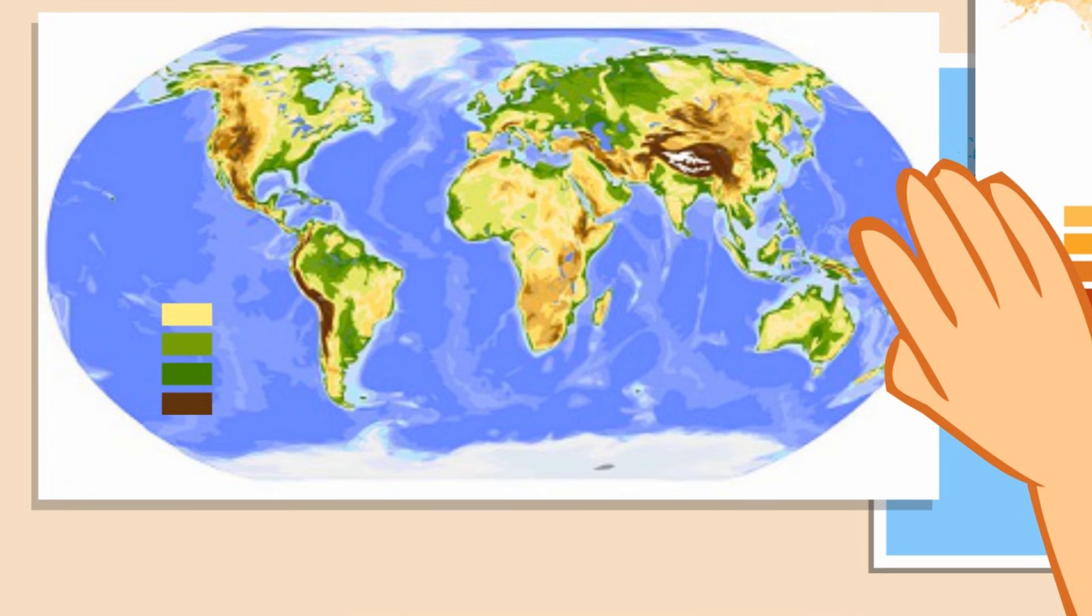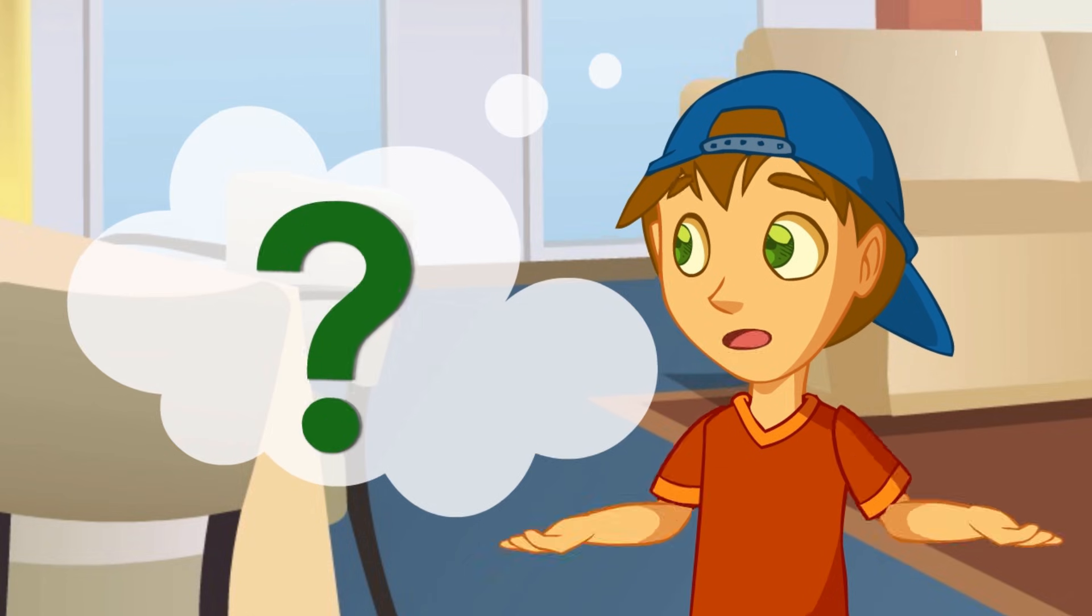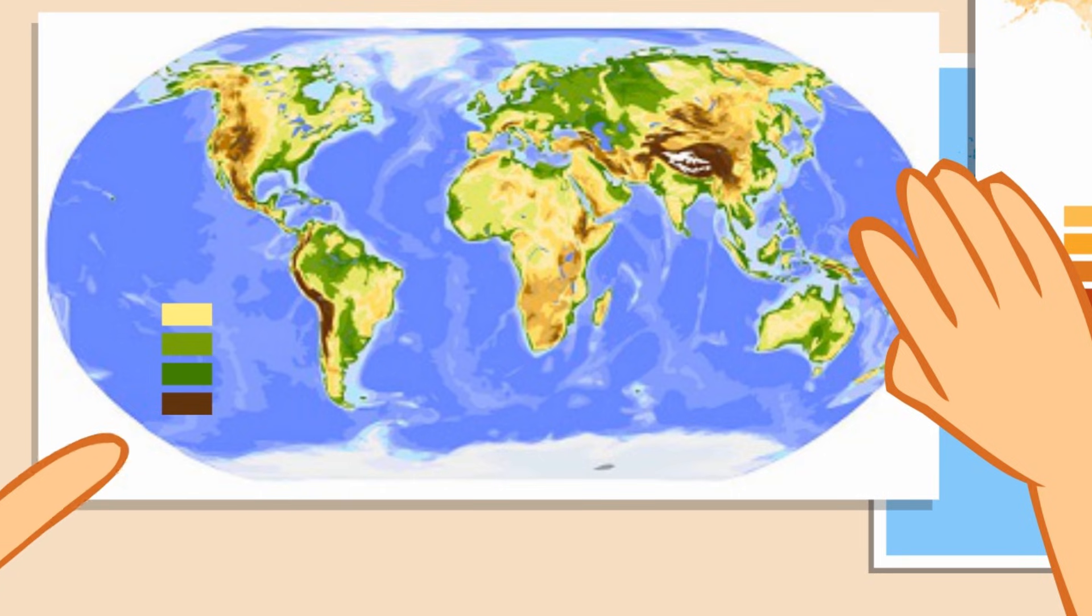This other map is a physical map. Does it also show what each color represents? Yes, look, brown represents the highest places. In other words, the mountains.